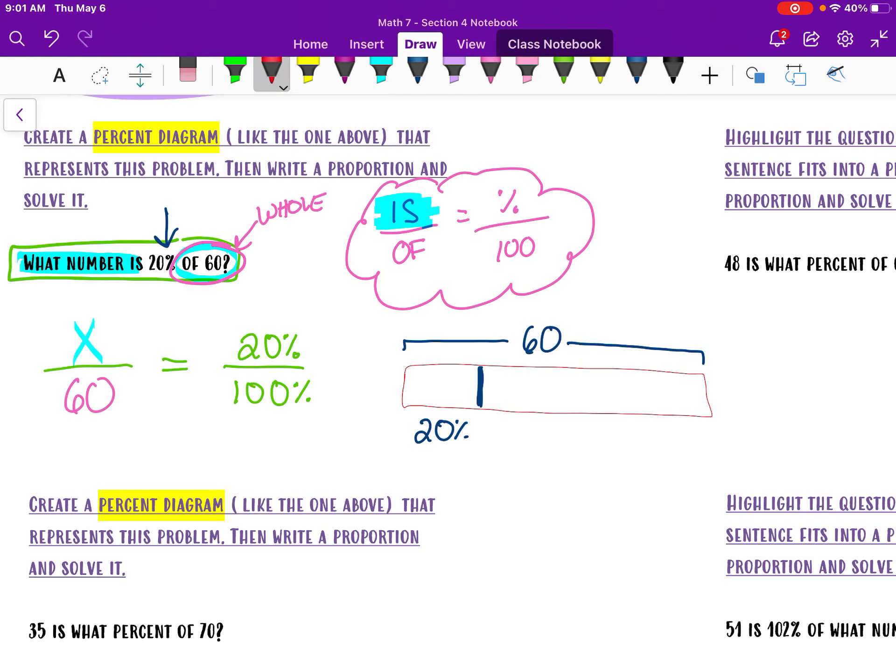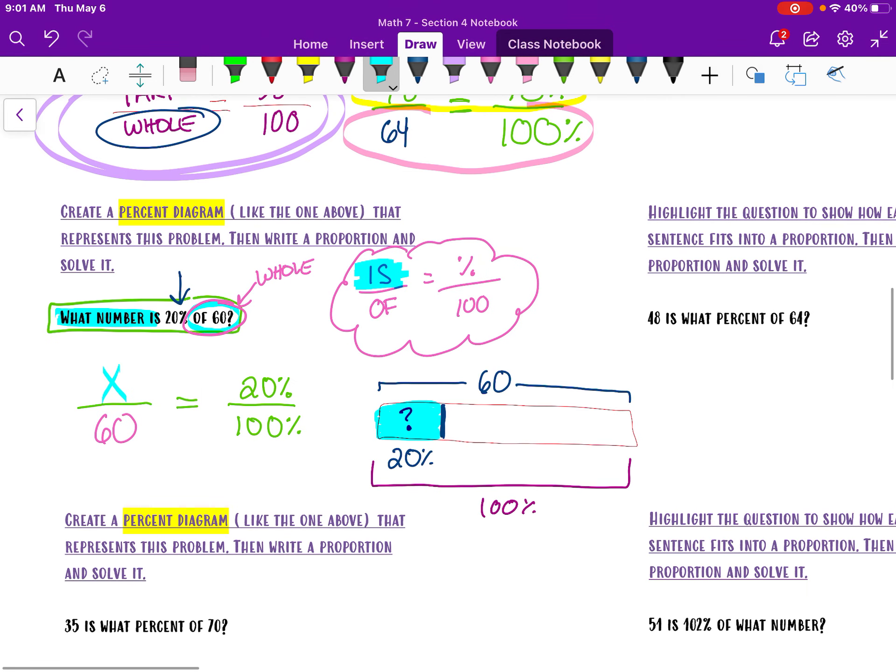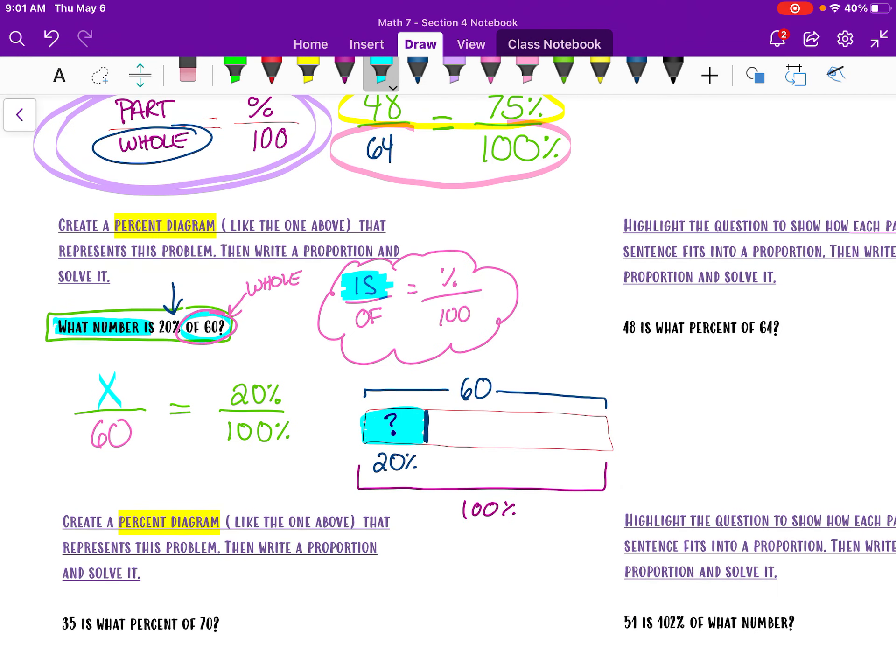So I know that 60 is the whole bar, and I know that this whole bar is 100%. So what I need to figure out is I need to figure out this part right here. This is the part that I'm trying to solve for. I need that part of 60. I need 20% of 60. So that's how I would show my diagram there.